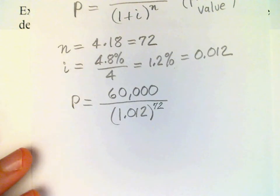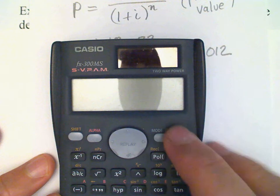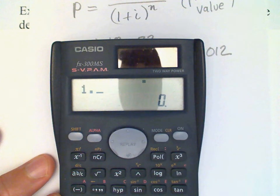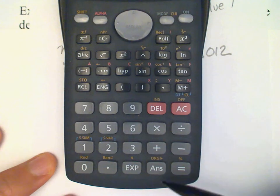Let's work that out on the calculator. I always do the compound interest factor first: 1.012 raised to the 72nd power, and the answer is 2.36. We need to divide 60,000 by this amount, so I'm going to go 60,000 divided by answer. My answer button is right down here at the bottom.